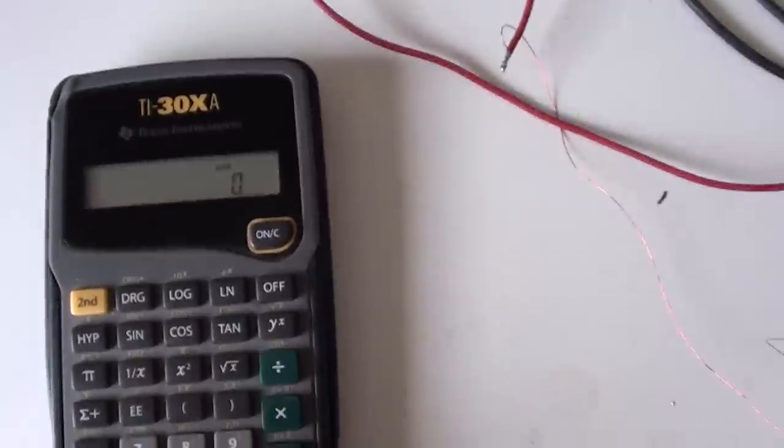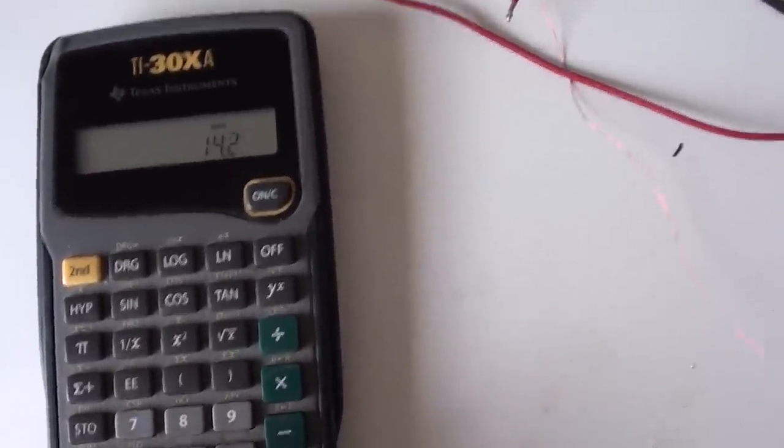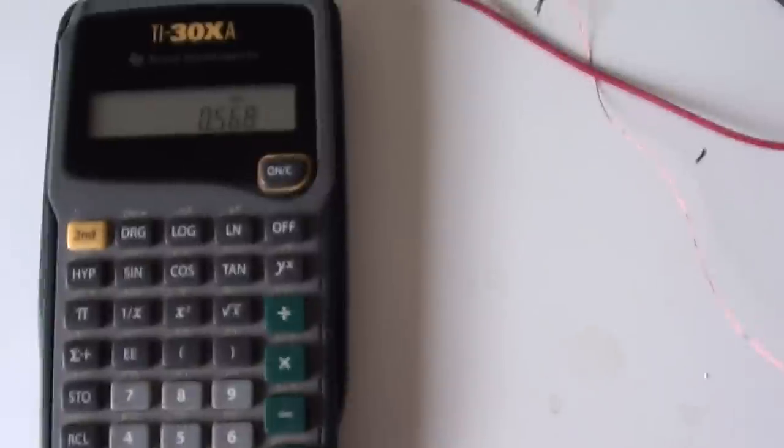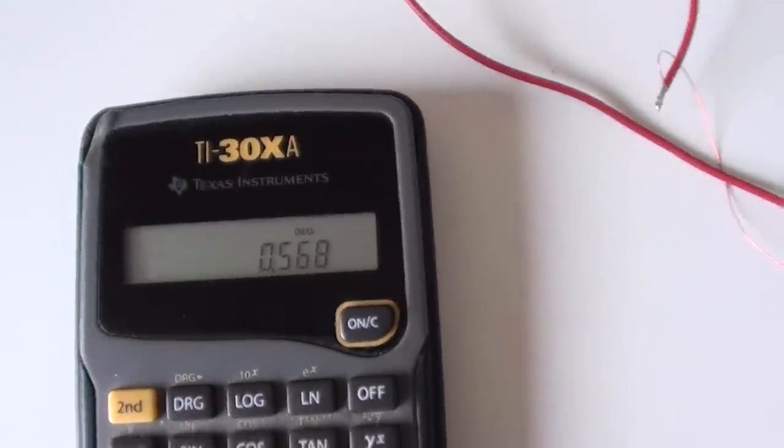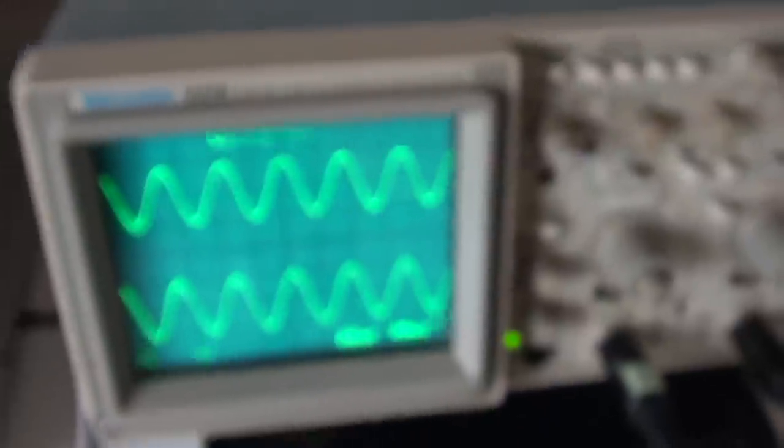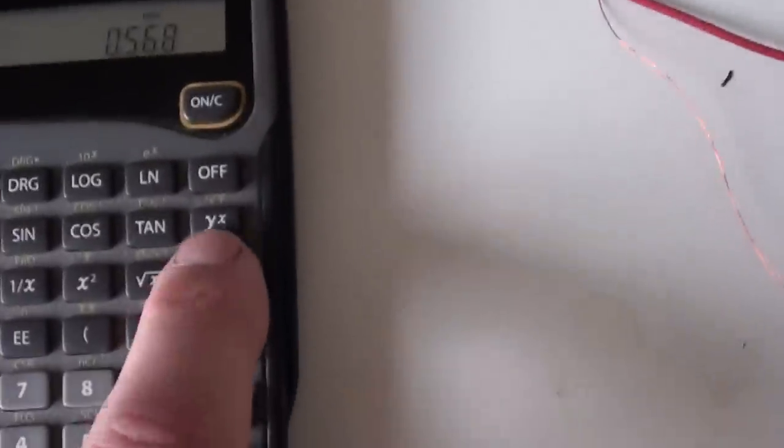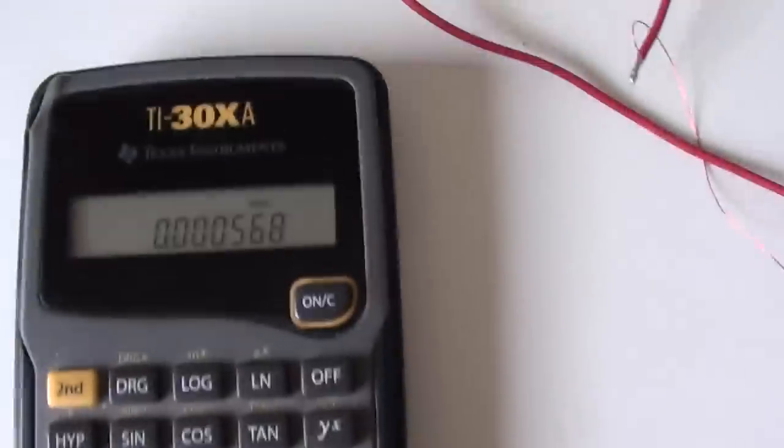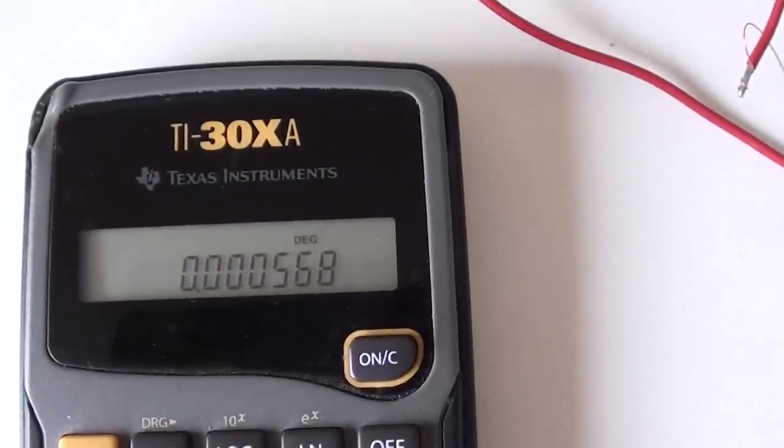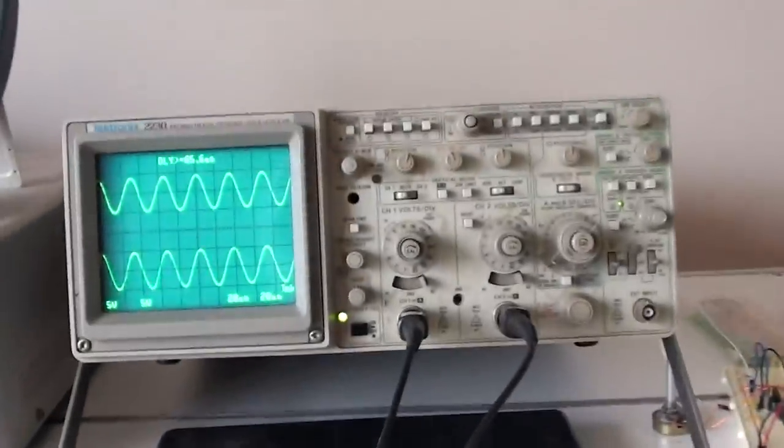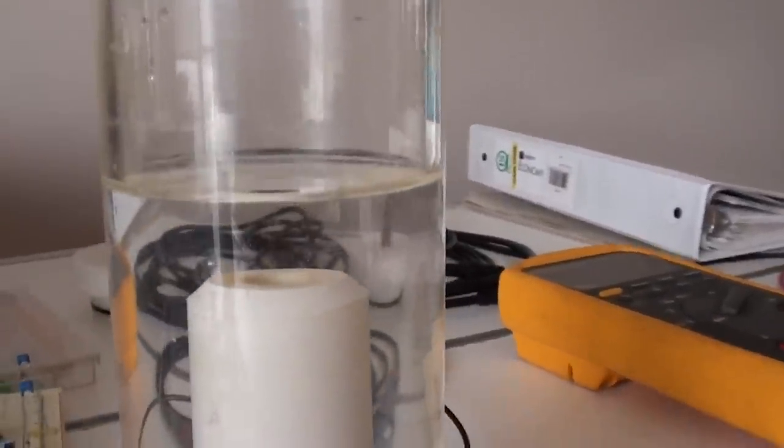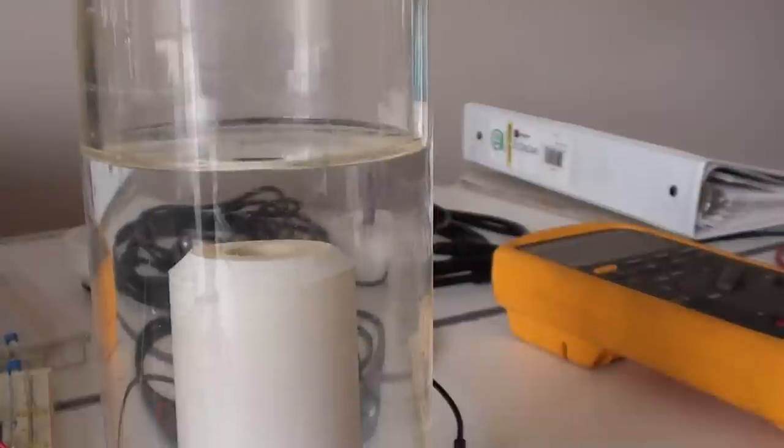So if we do the math, 14.2 volts times 0.04 amps, that's only 0.568 watts. Now we have 1,000 volts. We divide this by 1,000 gives us an amp draw of 0.000568. So that's a little over half of a milliamp of power current going to the cell. And if we look carefully, you can see that it's trickling out a little bit of gas.